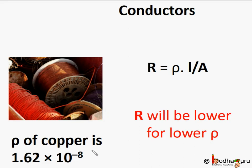Silver has a lower resistivity than copper — 1.6 × 10⁻⁸ ohm meter — which is better than copper, making it a better conductor. But silver is costly too.